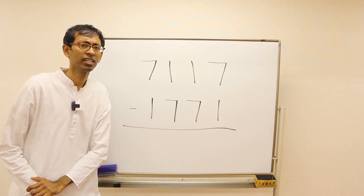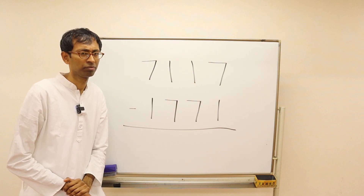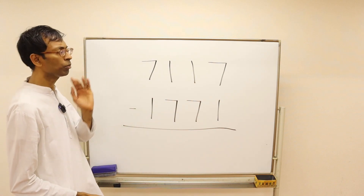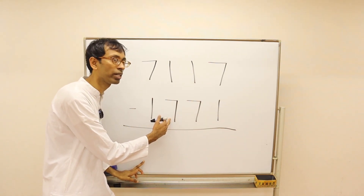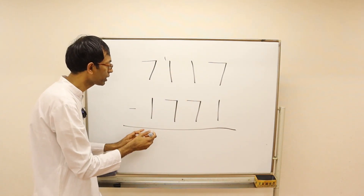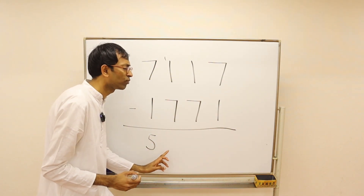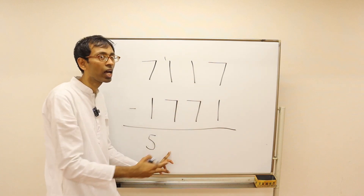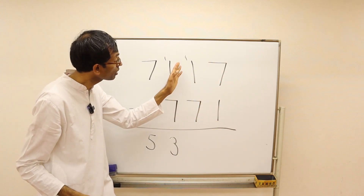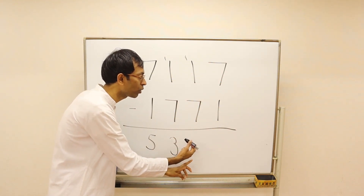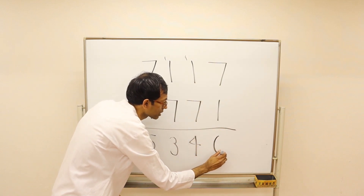This one is a little more tricky — pause the video and see if you can do it. Let's do it together: 7 minus 1 is 6, but the next column needs help, so we put down 5. Then 11 minus 7 is 4, but the next column needs help, so we put down 3. Then 11 minus 7 is 4 and that column doesn't need help, so we write 4. Then 7 minus 1 is 6.